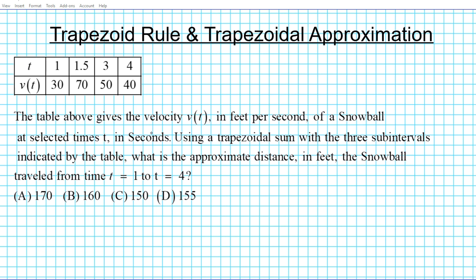The question reads: the table above gives the velocity v(t) in feet per second of a snowball at selected times t in seconds using a trapezoidal sum with three sub intervals indicated by the table. What is the approximate distance in feet the snowball travels from time t equals one to t equals four?